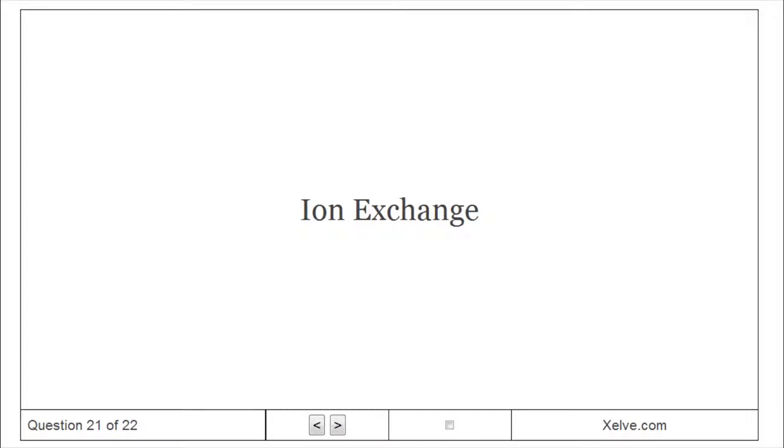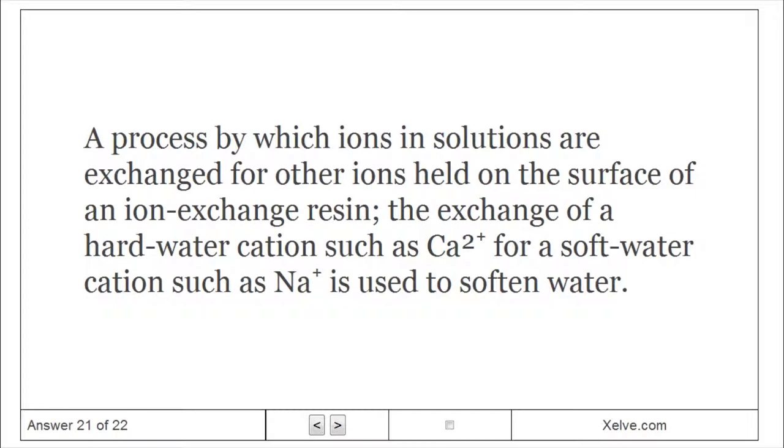Ion Exchange: A process by which ions in solutions are exchanged for other ions held on the surface of an ion-exchange resin. The exchange of a hard-water cation such as Ca²⁺ for a soft-water cation such as Na⁺ is used to soften water.